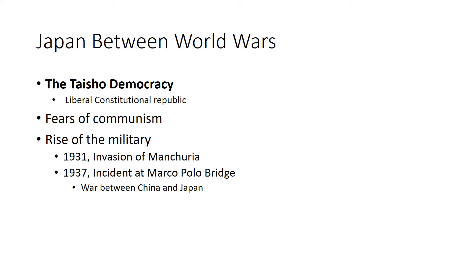This period saw some major changes in Japan, largely because whereas the Meiji Emperor was very active and his government relied heavily upon the oligarchy of elder statesmen, the new Taisho Emperor had a lot of health problems and wasn't as actively involved. Power shifted toward the Japanese parliament known as the Diet, which has nothing to do with food, that had been established under Meiji.